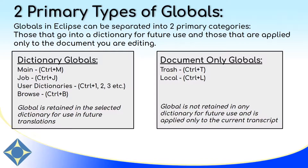Document-only globals, by contrast, apply only to a single document. Trash globals will change every instance of the steno in the document when you global it, however will not be saved into any of your dictionaries. A local replacement will replace only a single instance. If you've made a simple miss stroke and want to correct it quickly, a local replace may be the answer. And if you made up a stroke for a job but definitely don't want to add it to your dictionary, a trash global may be for you instead.